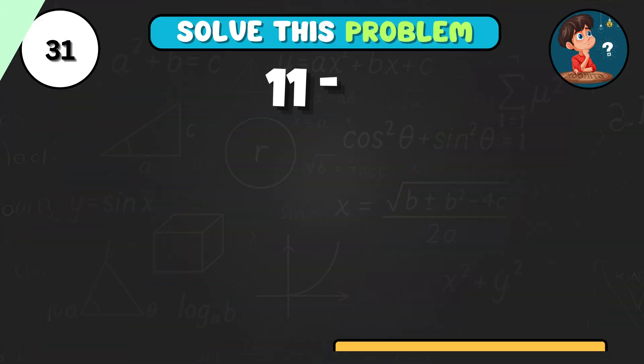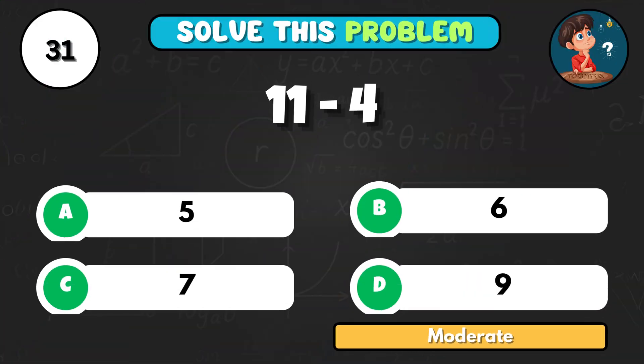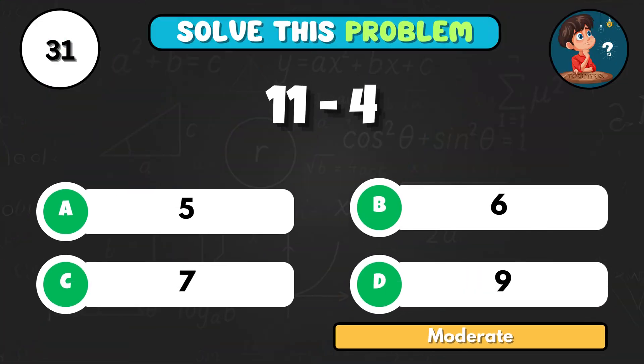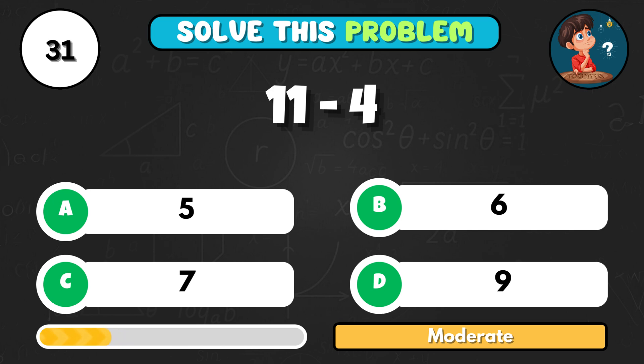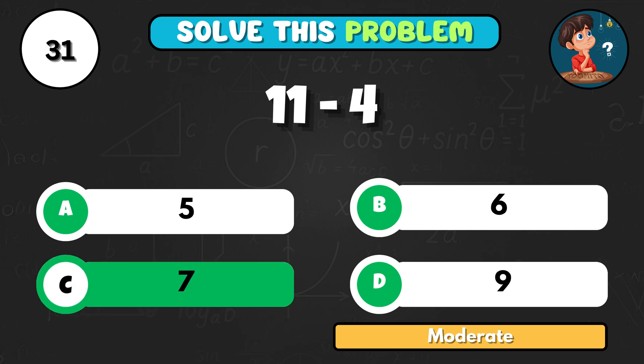11 minus 4 equals what? The correct answer is C7.